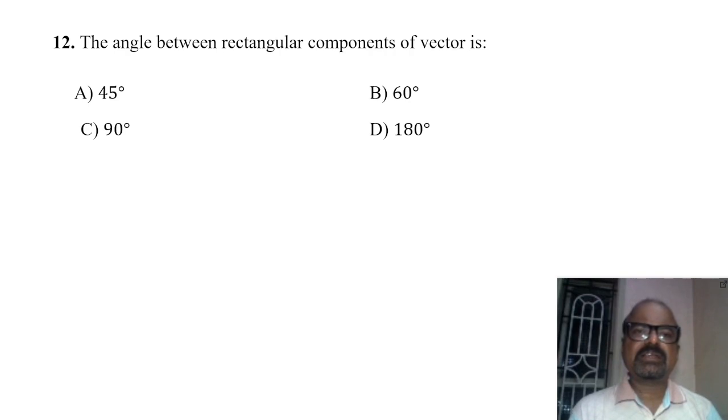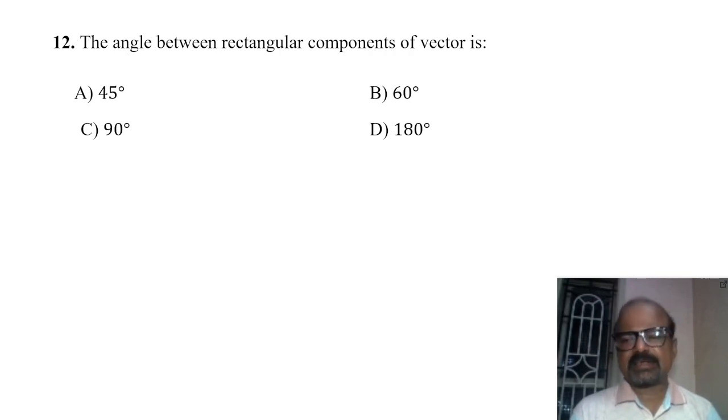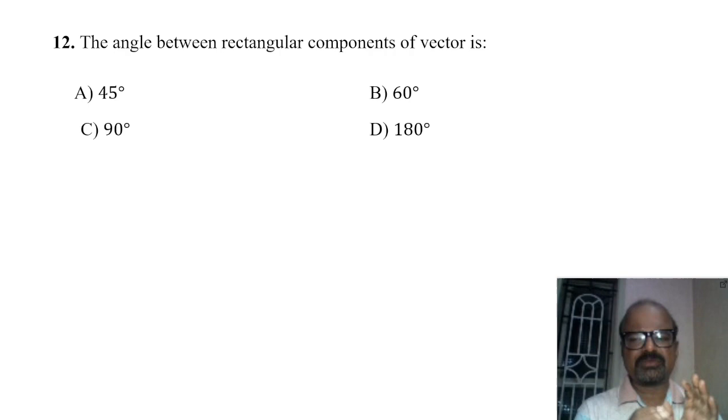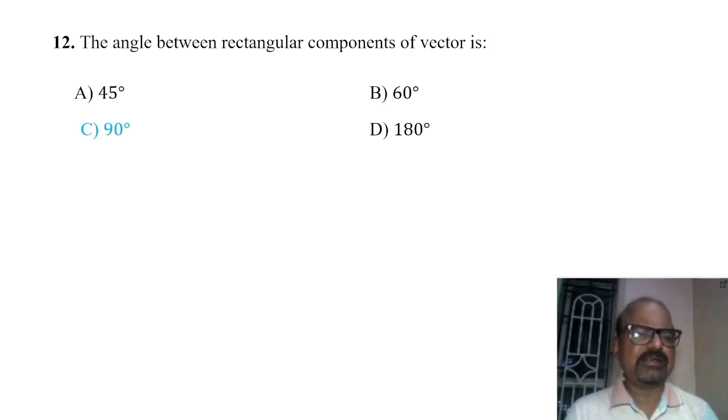The angle between the rectangular components of a vector is 90 degrees.